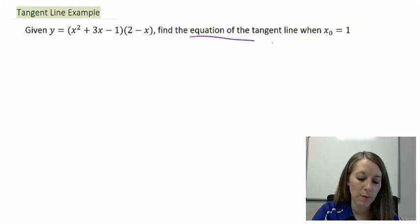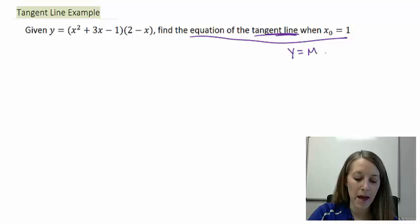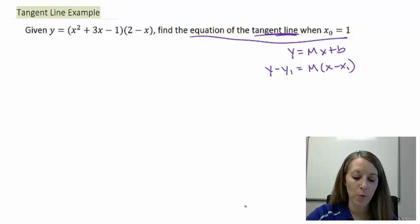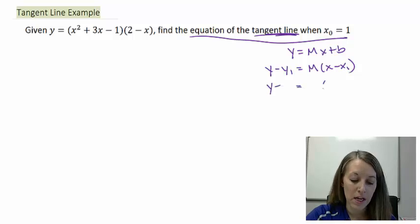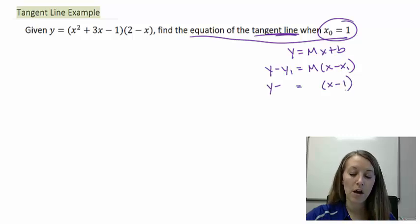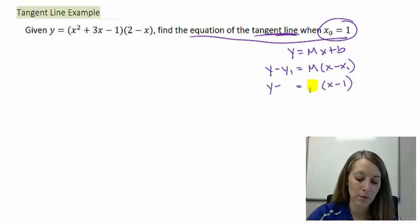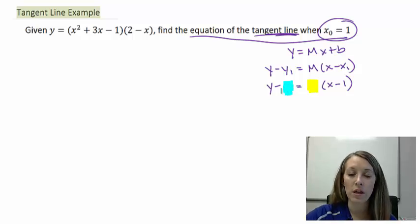When we want to come up with the equation of a line, we can either use the y equals mx plus b formula, or my preference, the y minus y1 equals m times x minus x1 formula, where x1, y1 is a point and m is the slope. The only thing that we know at this specific time is my x value because that was given. My x value is given as 1. So we're going to have to do some extra work to come up with our slope and our y value. We can start with either one.